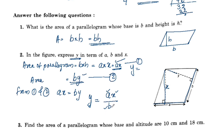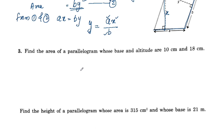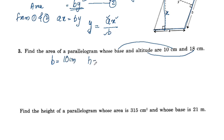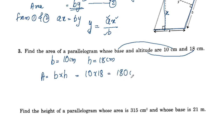Find the area of a parallelogram whose base is 10cm and altitude is 18cm. The base is 10cm and the altitude is 18cm. The area of a parallelogram equals base times height, so area equals 10 times 18, which equals 180 cm square.